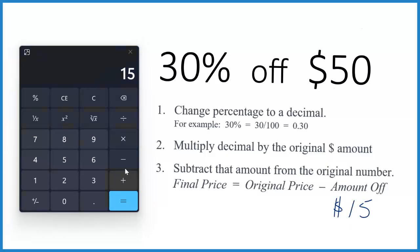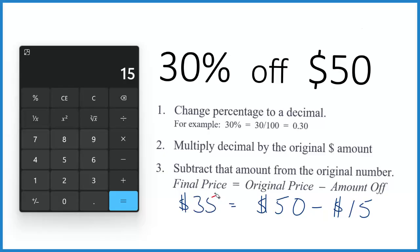Now we want to know how much we pay — our final price. We take the original price, the $50, and we say 50 minus 15. So we're paying a total of $35. When we get that 30% off $50 on a sale, our final price is going to be $35, and we'll have saved $15 off.